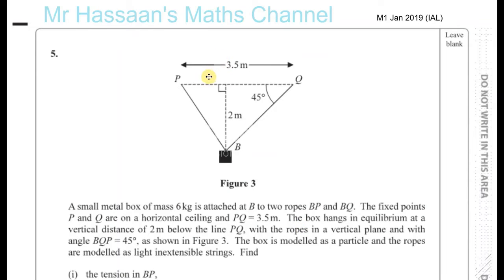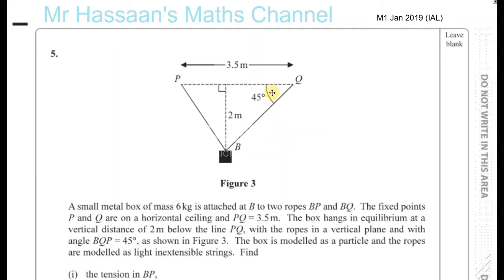For question five from M1 January 2019 International A Level, we have a statics question. A small metal box of mass 6 kilograms is attached at B to two ropes BP and BQ — two separate ropes, so they have different tensions. The fixed points P and Q are on a horizontal ceiling, PQ is 3.5 meters long. The box hangs in equilibrium at a vertical distance of 2 meters below PQ, with angle BQP being 45 degrees.